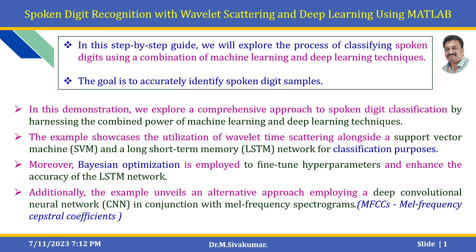In this demonstration, we explore a comprehensive approach to spoken digit classification by harnessing the combined power of machine learning and deep learning techniques. This example showcases the utilization of Wavelet time scattering transform alongside a Support Vector Machine and a Long Short-Term Memory network, shortly known as LSTM network, for classification purposes. Moreover, Bayesian optimization is employed to fine-tune hyperparameters and enhance the accuracy of the LSTM network. Additionally, this example unveils an alternative approach employing a deep convolutional neural network in conjunction with mel-frequency spectrograms, known as MFCCs.